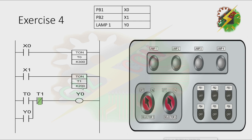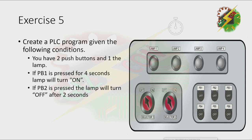Now let's go to exercise 5. Create a PLC program given the following condition. You have 2 push buttons and 1 lamp. If PB1 is pressed for 4 seconds, the lamp will turn on. If PB2 is pressed, the lamp will turn off after 2 seconds.